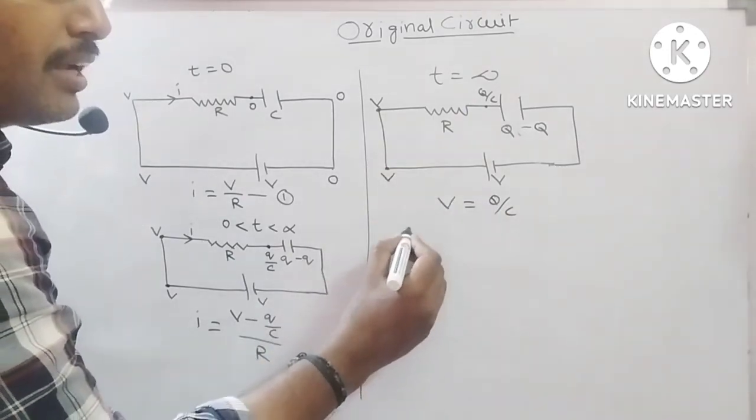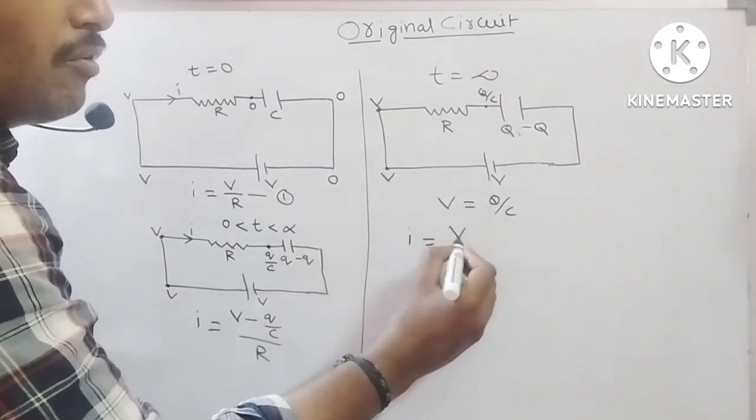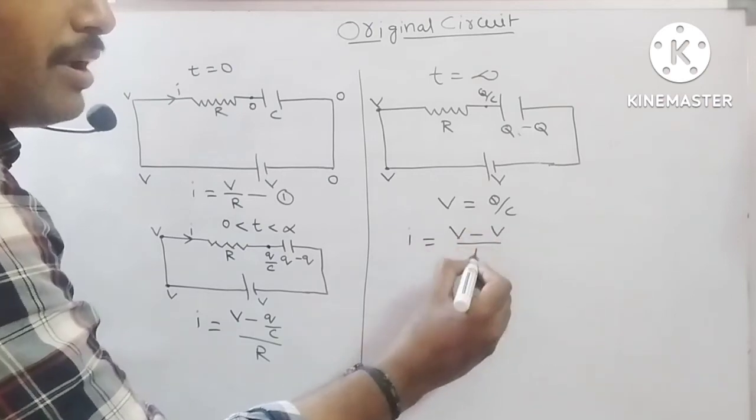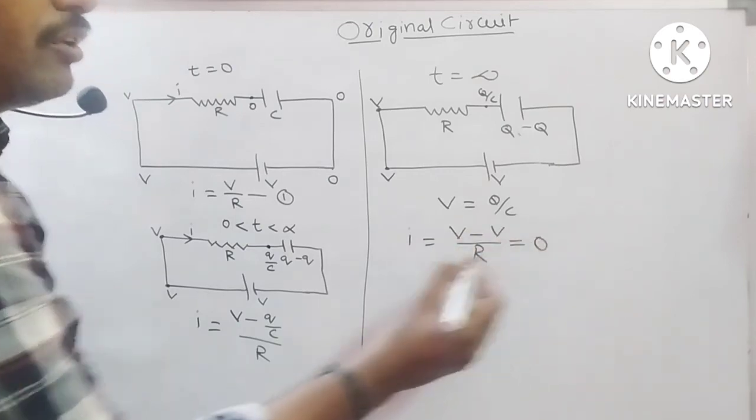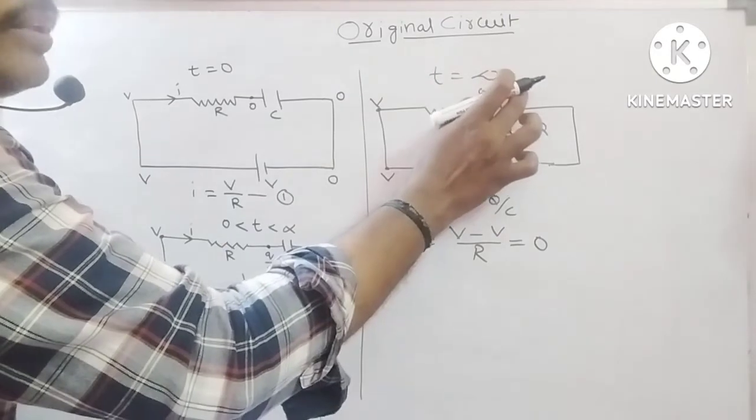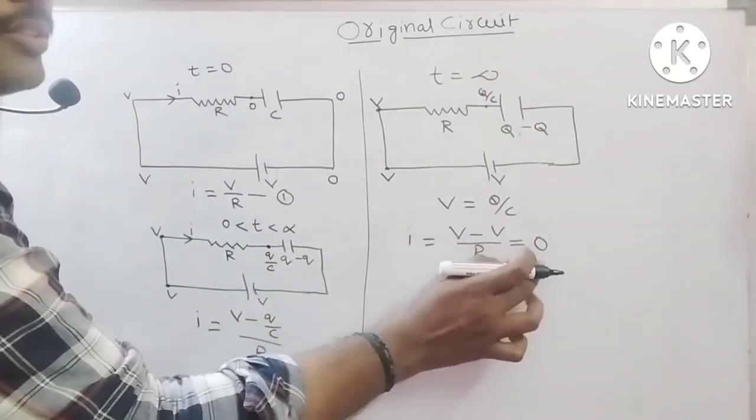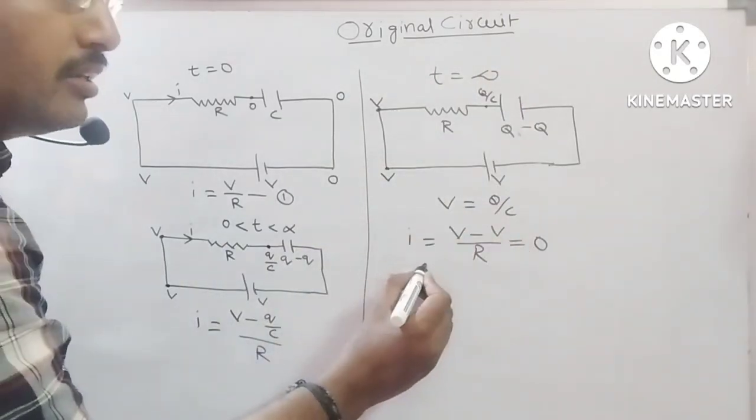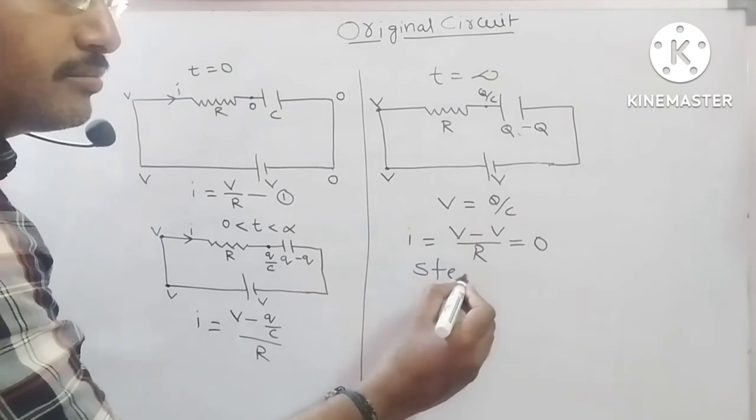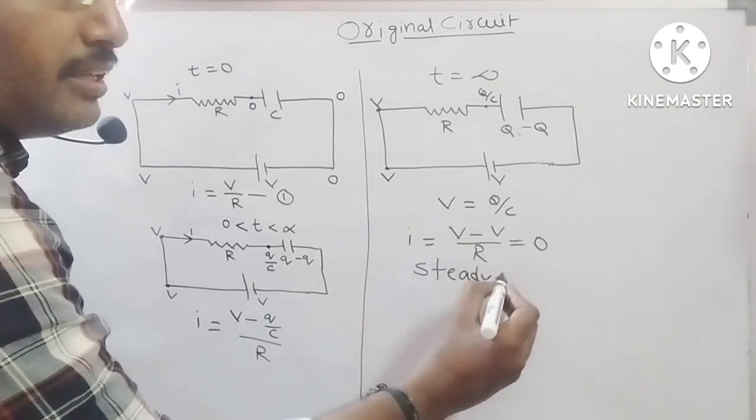If you substitute here, current I is equal to V minus V by R, that is equal to 0. At T equal to infinity, no current passes the circuit. We call this steady state.